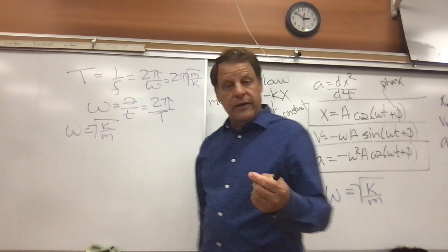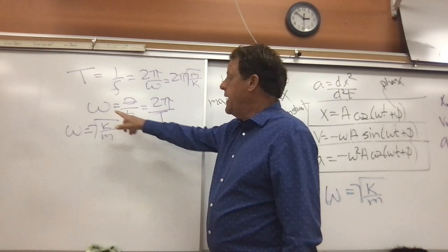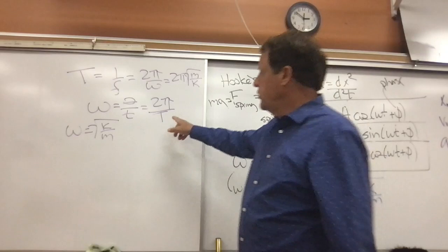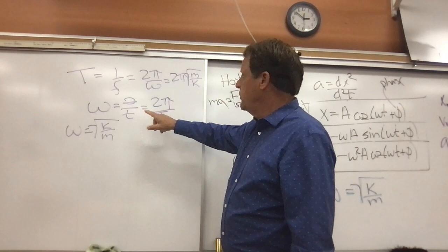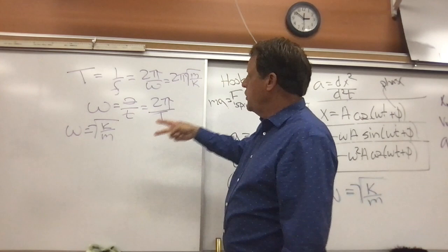We can think of omega as the angular velocity, and if we want to know the speed of something it's omega times distance divided by T. We take a specific distance — the angle of one complete revolution — which takes T, the period. From this, we can put in for period 2π over omega, which would also be 2π times the square root of M over K.